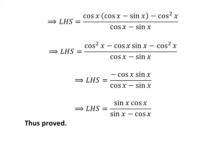As multiplying the numerator and the denominator by a common factor does not change the value of the fraction, multiplying by minus 1 gives us the left hand side equal to sine of x times cosine of x upon sine of x minus cosine of x, which is the right hand side. Hence proved.